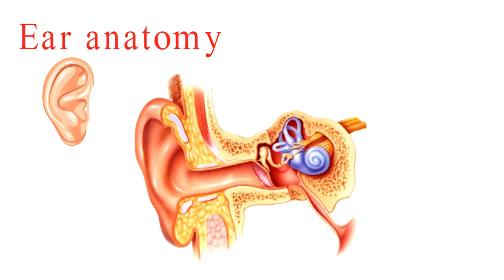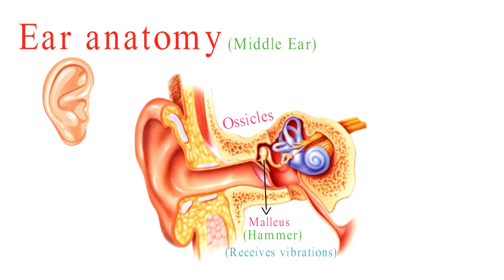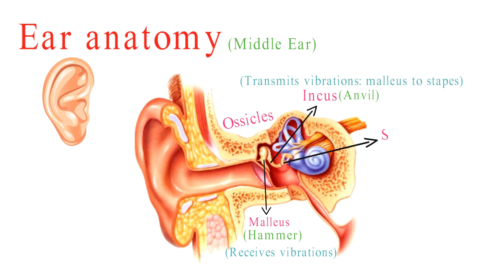There are three tiny bones in the middle ear, collectively known as ossicles. The malleus, or hammer, is attached to the eardrum and receives vibrations from it. The incus, or anvil, transmits vibrations from the malleus to the stapes. The stapes, or stirrup, is the smallest bone in the human body and transmits vibrations from the incus to the inner ear.